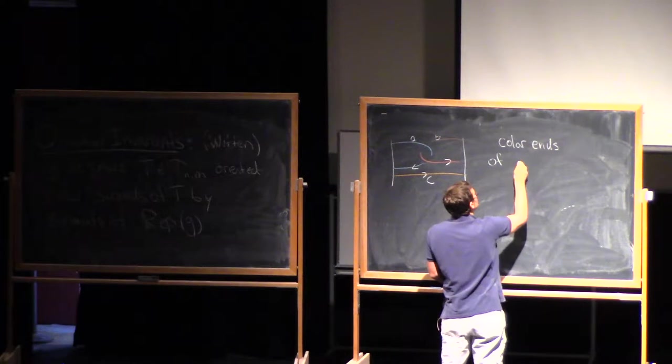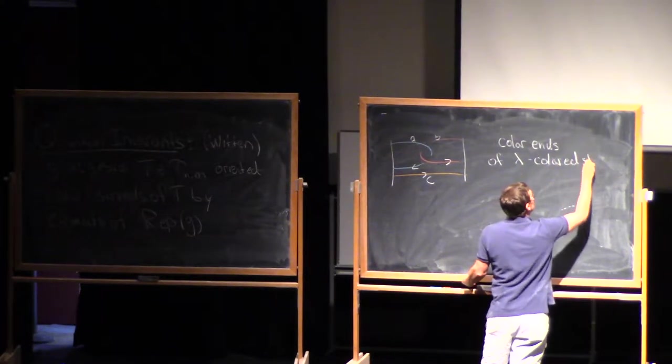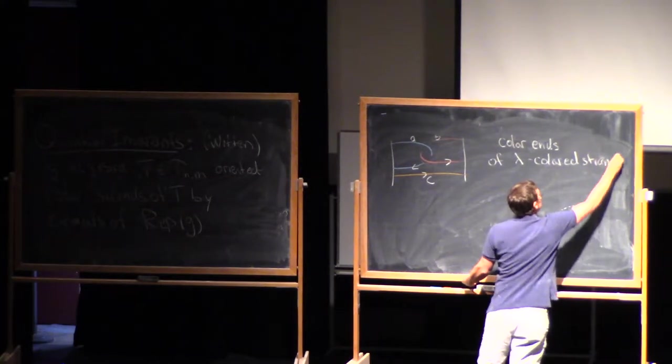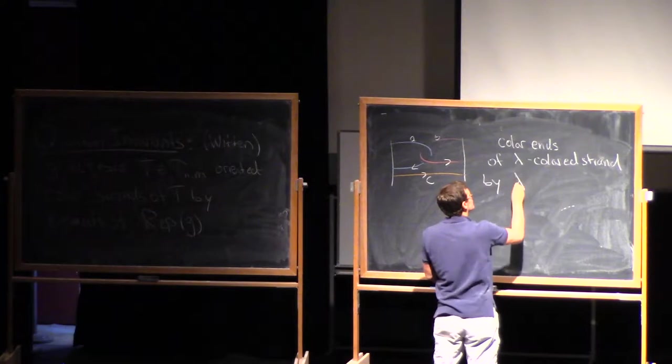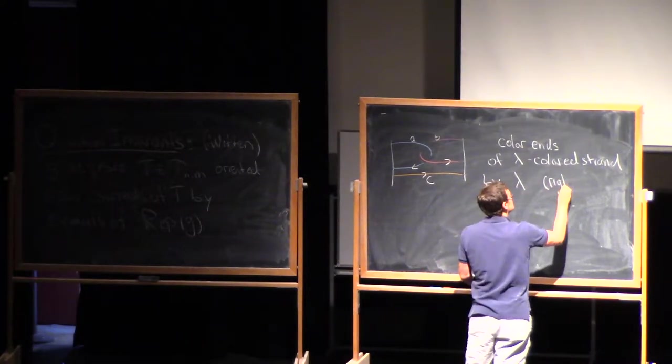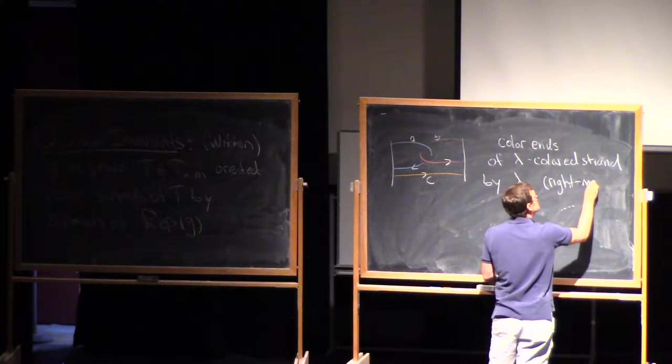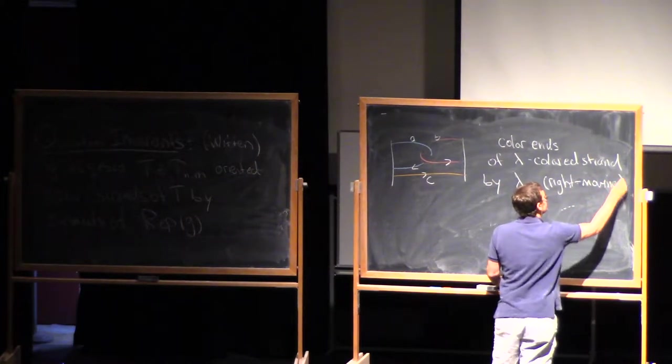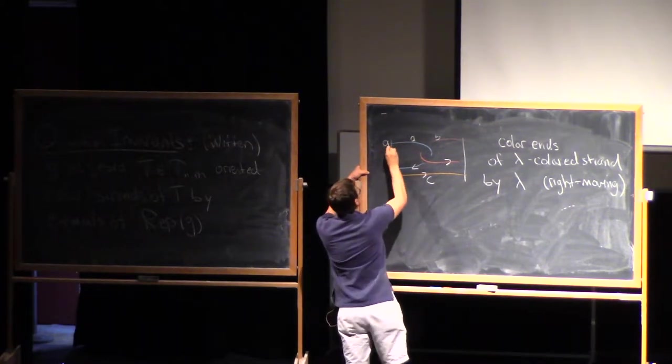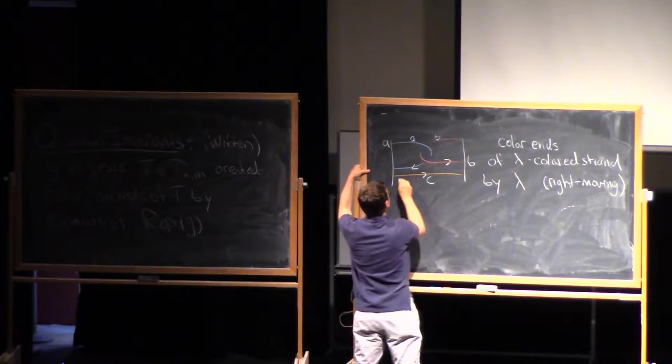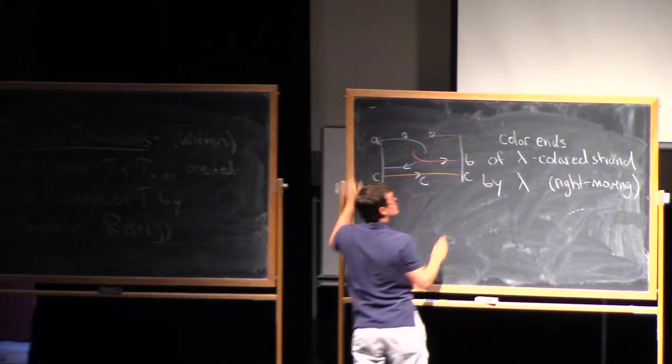So far, when we were thinking about the Jones polynomial, the orientation wasn't particularly important, but now all of a sudden it is. So maybe I'll orient the tangle this way in this picture. And then I'll color the ends of the tangle.